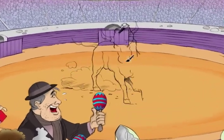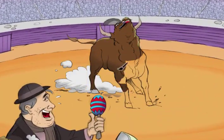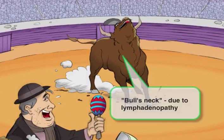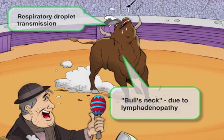We'll draw our bull here extending his head backwards to display his massive bull neck. We'll also draw some droplets coming out of his mouth as he charges, to remind you that diphtheria is transmitted by respiratory droplets.